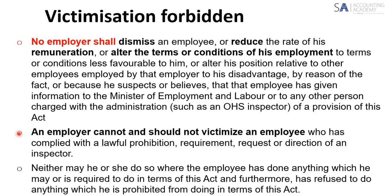An employer cannot and should not victimize an employee who has complied with a lawful prohibition, requirement, request or direction of an inspector. If the inspector asks them to answer a question and they do, they cannot be victimized for it because they are doing what the act says they should. Similarly, an employer may not victimize an employee for doing anything required in terms of the act, or for refusing to do anything prohibited under the act — if they refuse to do something within the confines of the law, they are entitled to do so.